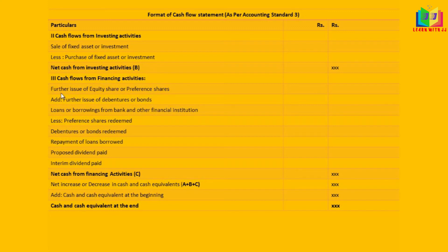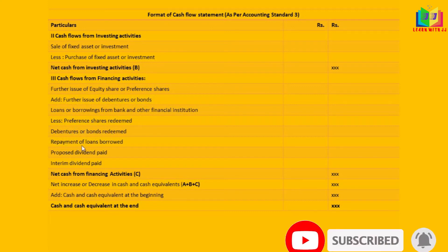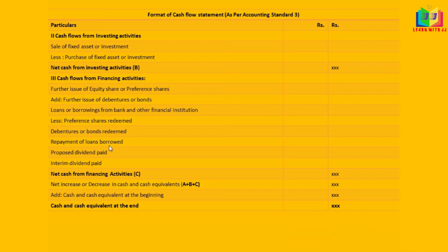For cash flow from financing activity, we add further issue of equity shares or preference shares, issue of bonds and debentures, and loans or borrowings from banks and financial institutions. We subtract preference shares redeemed, bonds and debentures redeemed, repayment of loans, proposed dividend paid, and interim dividend paid. This gives us the net cash from financing activity, labeled as C.